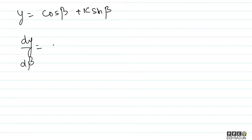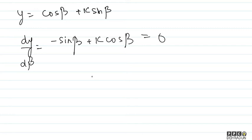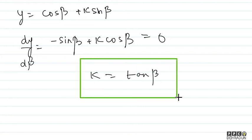Differentiating y = cos beta + K sin beta with respect to beta: dy/d beta = minus sin beta plus K cos beta. Setting this equal to 0 gives K equals tan of beta. So K = tan beta is our critical point where dy/d beta = 0.